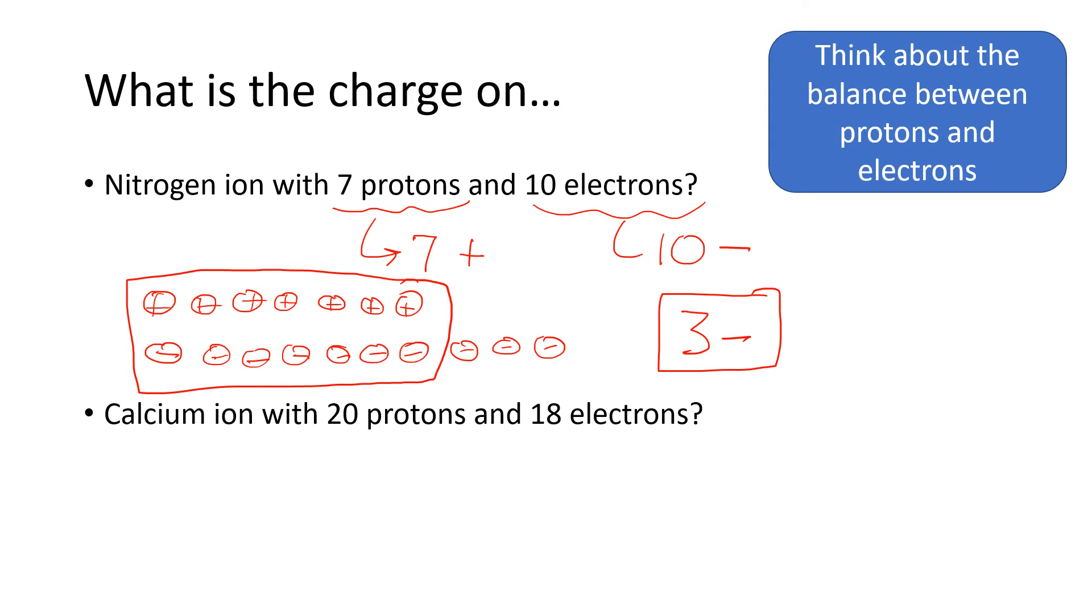If instead we look at the calcium ion, we're going to have 20 positives and we're going to have 18 negatives. So 18 of our positive charges from the protons will cancel out with the electrons, leaving two extra protons. So you just have to think about the balance between protons and electrons. If you have more protons, you have more positive charges, and so when you subtract the two numbers, you'll have a positive charge. But if you have more electrons, then when you subtract the two numbers, the charge that you have should have a negative sign.